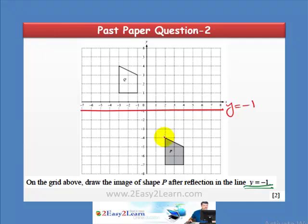Now let's reflect each corner of this shape on this line. Count how many units this point is away from the line of reflection: 1, 2, 3 — so this point is 3 units away. It will reflect on the other side, so count 1, 2, 3 and mark the point. Now reflect the next point: count 1, 2, 3, 4 on each side.